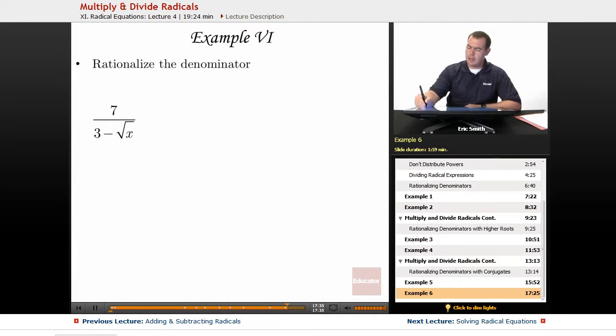With this one, I'm going to have to multiply the top and the bottom by its conjugate. Even though it has an x in there, no worries. This will be 3 plus the square root of x. We'll do that on the bottom and on the top.